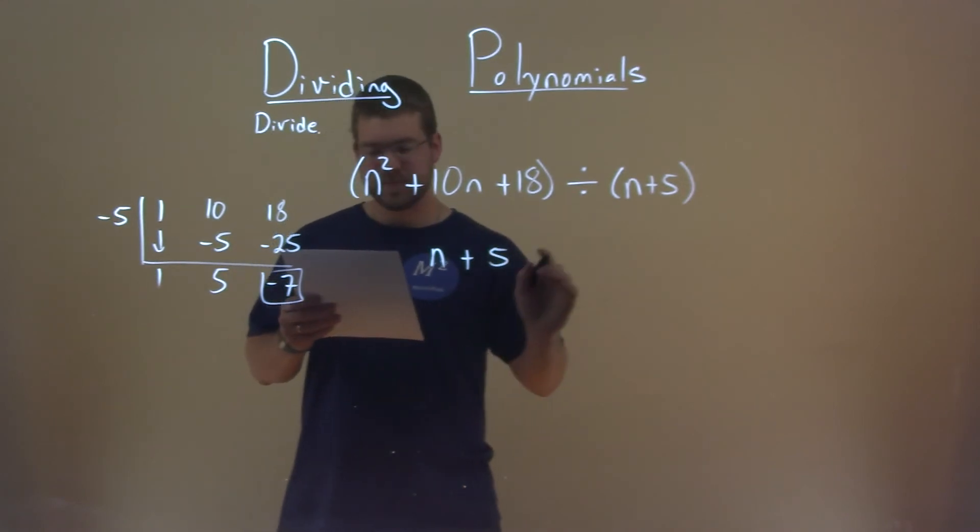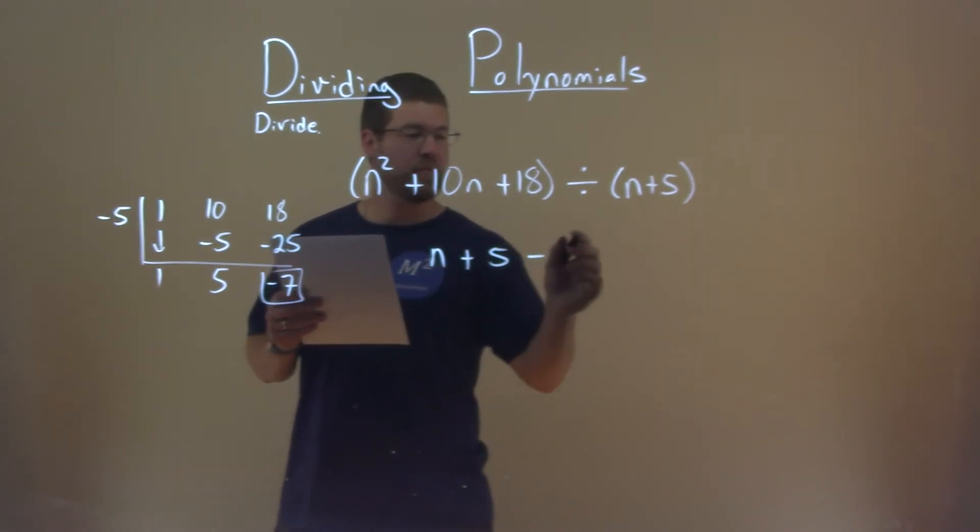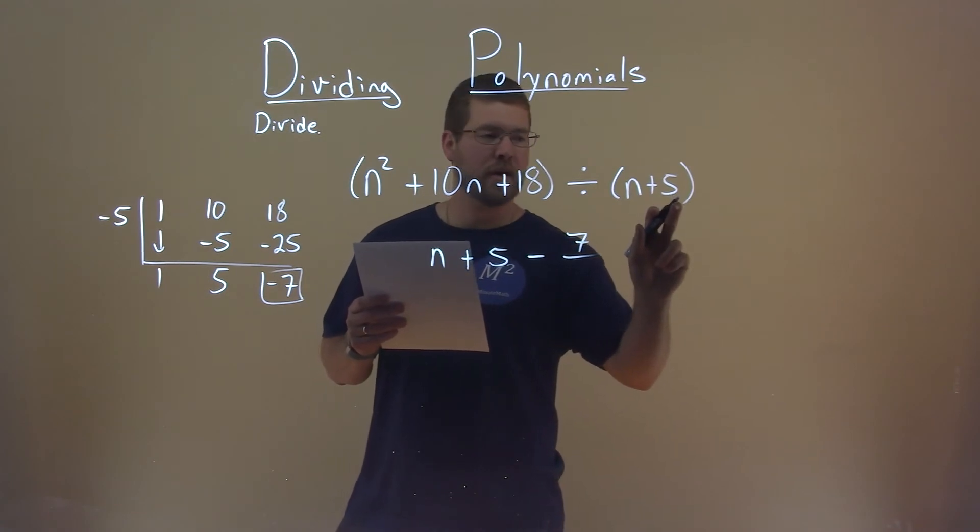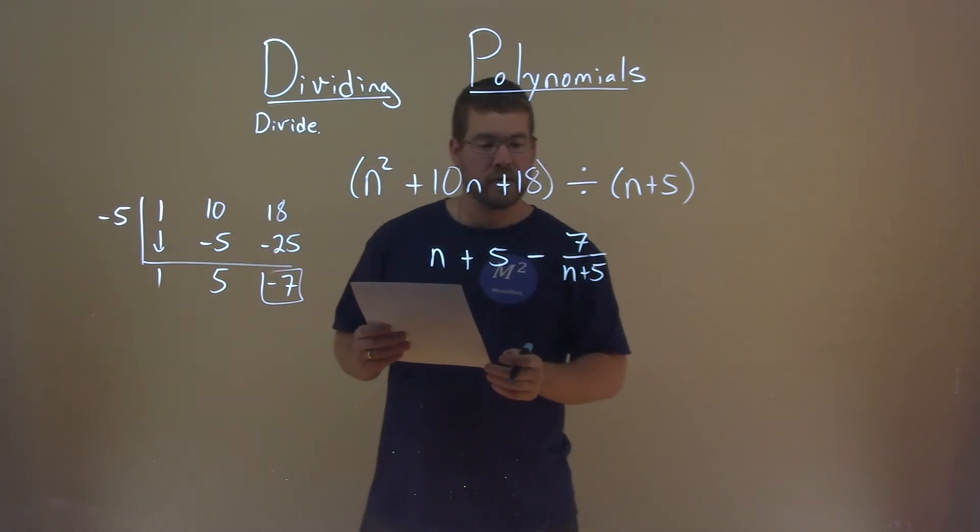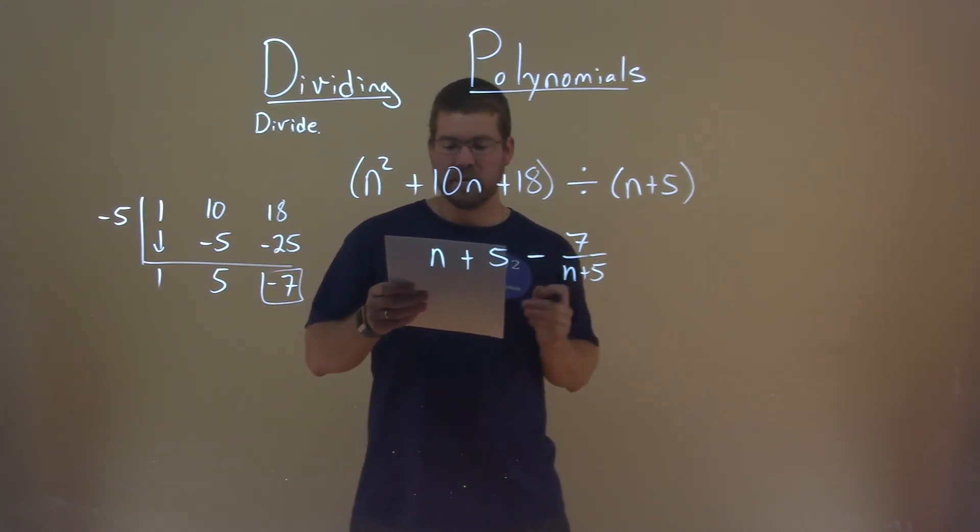minus our remainder 7, over what we're dividing it by, n plus 5, and that's it. Our final answer is n plus 5, minus 7, divided by n plus 5.